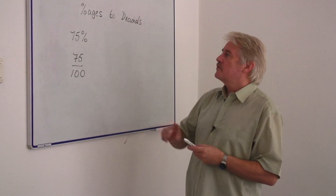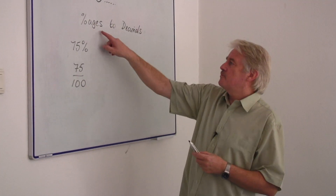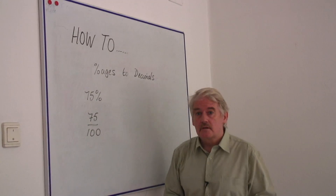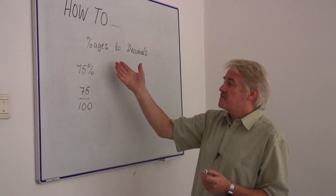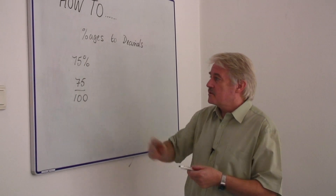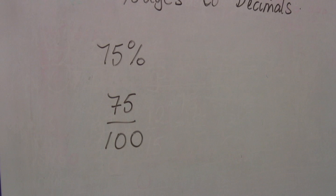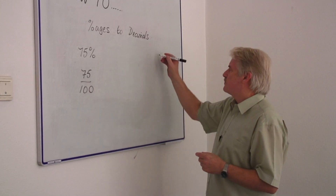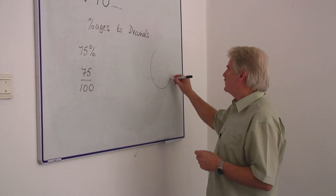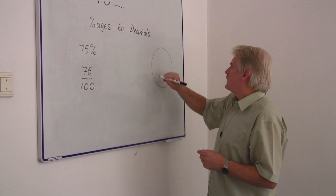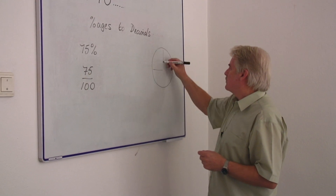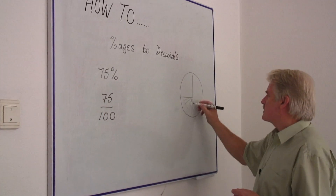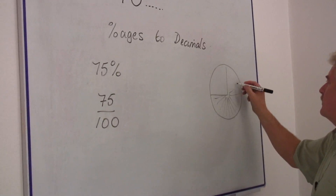Hi, I'm Steve Jones and I'm going to tell you how to turn percentages into decimals. Now the obvious, we've got to start with the percentage. Here we've got 75%. Nice and simple. What does 75% mean? Well actually it means that we've got 75 parts out of 100.